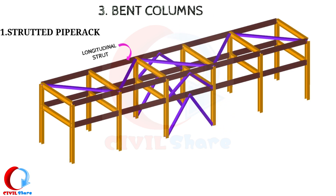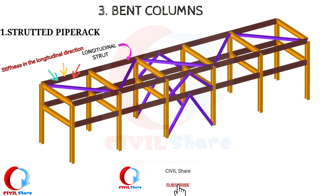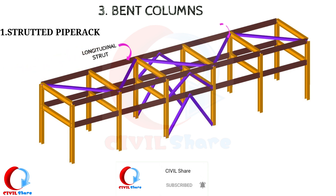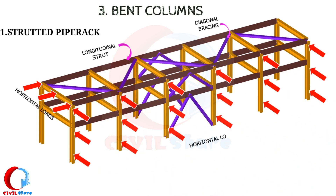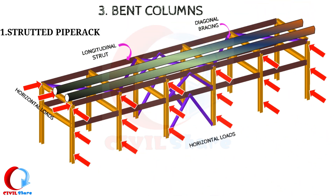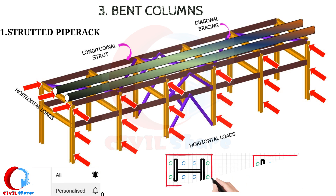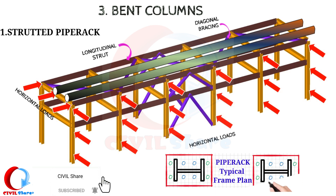Bent columns — the first type is strutted, which has longitudinal struts between the transverse frames. This addition provides stiffness in the longitudinal direction. In addition, diagonal bracing can be added to act together with the longitudinal struts to resist horizontal loads. This arrangement is very common. For strutted pipe racks, columns shall normally be designed with pinned or fixed base, depending on the lateral drifting requirements.